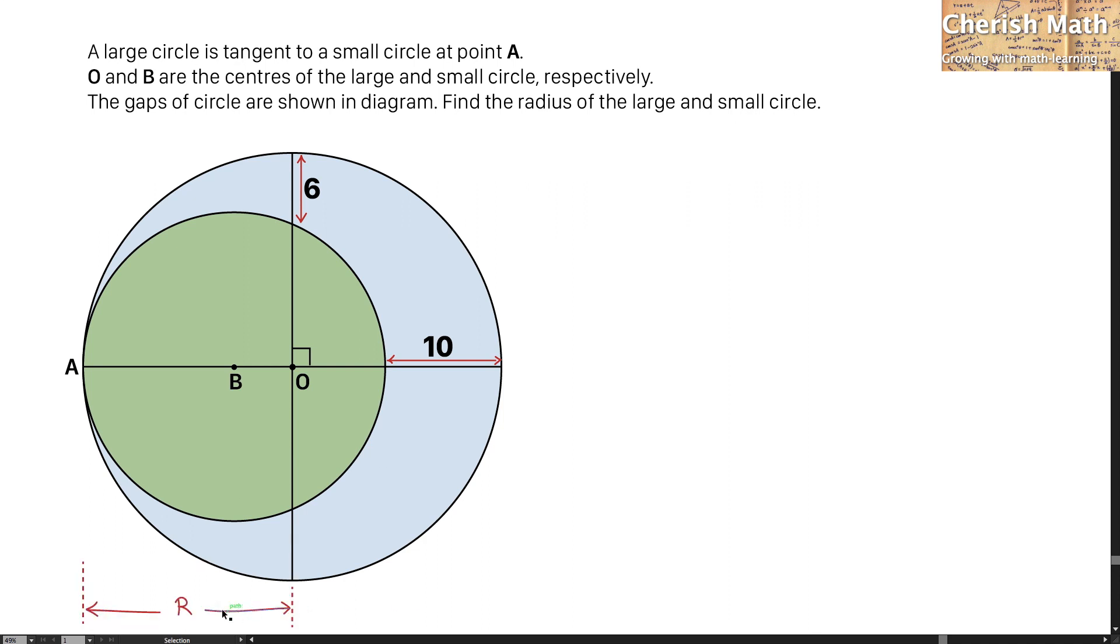I'm going to label capital R as the radius of the large circle and the letter r for the radius of the small circle, which is the length of AB.